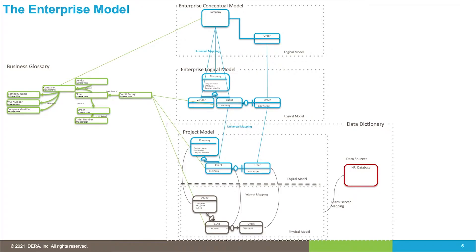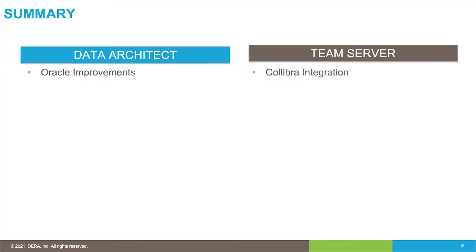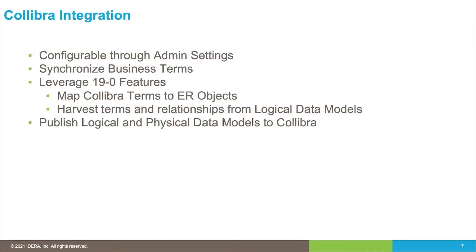The newer part is on the left - our business glossary. We want to create a business glossary and relate it to our data models. In the demonstration you're about to see, you'll see how we can publish a lot of this information to the Calibra data governance tool. There are two areas we've developed in this release: in Data Architect, we've done a lot of work on Oracle, and the second part is the Calibra integration in Team Server. Let's start with the Calibra integration.